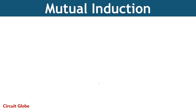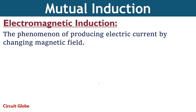Before elaborating mutual induction, let's have a recap of electromagnetic induction, as mutual induction is originated from electromagnetic induction. Electromagnetic induction is the process of generating electric current by changing magnetic field. When current flowing through a circuit changes, the magnetic field associated with it also changes, leading to a change in magnetic flux. According to Faraday, a changing magnetic flux induces EMF in the coil, and due to the induced EMF, current is generated — known as induced current.